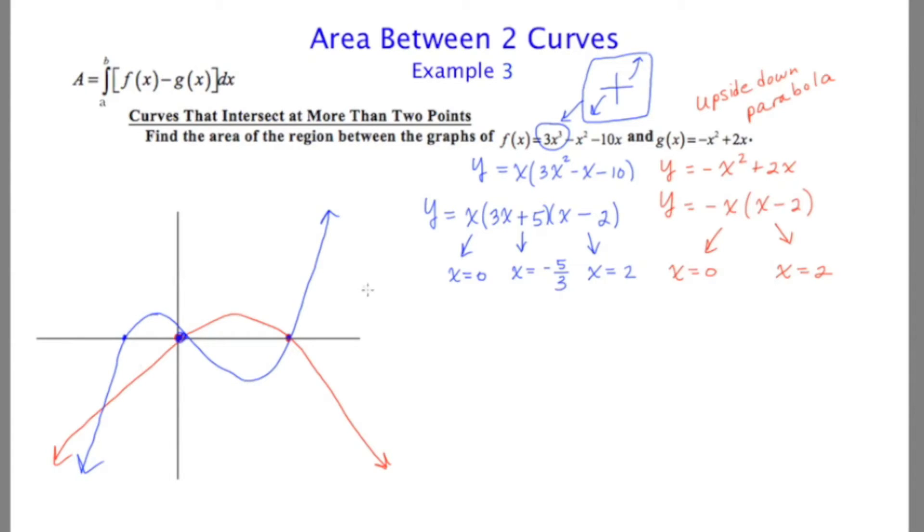Now, our objective is to find the region between the two curves. Let me identify that region with green. And the second region with purple. So in this problem, something interesting has happened. There are two regions that are formed. And in each of the regions, there's a different top curve and a different bottom curve.